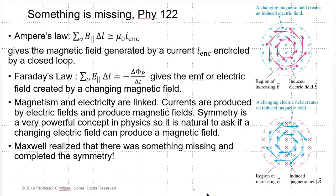Ampere's law gives the magnetic field generated by a current that's enclosed, circled by a closed loop. Faraday's law gives the EMF, or the electric field, created by a changing magnetic field. We know now that magnetism and electricity are linked. Before, they thought they were independent of each other. But now we know that currents are produced by electric fields and themselves produce magnetic fields.